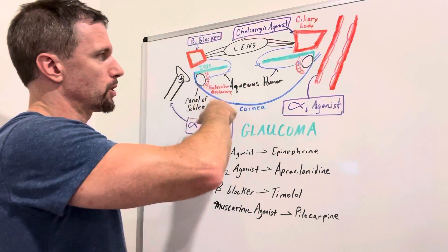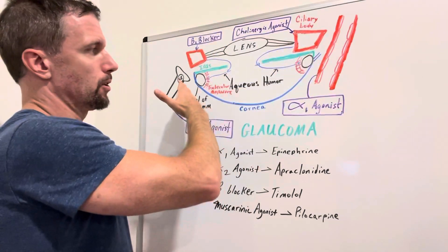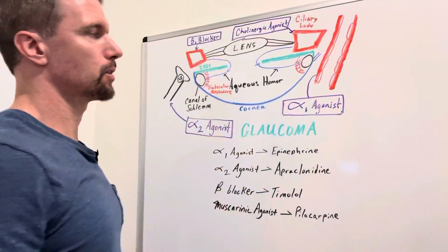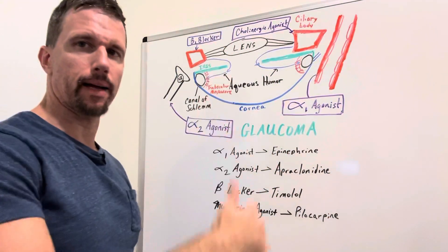So here's the eye. You have the cornea which is the outer part of the eye, it's convex, it refracts a lot of the light towards the fovea centralis at the back of the retina.